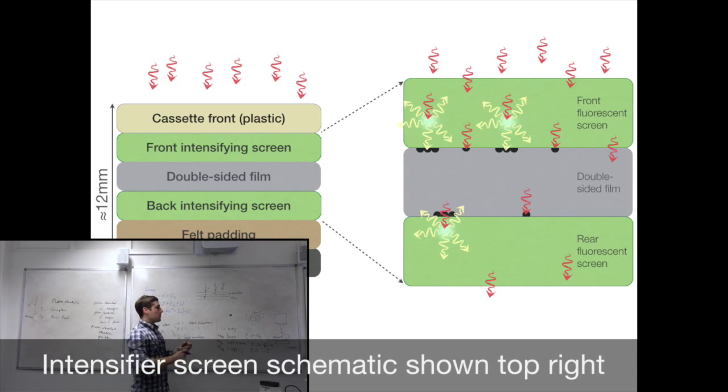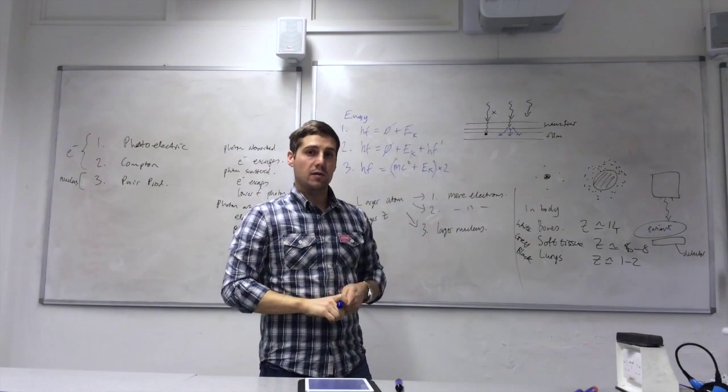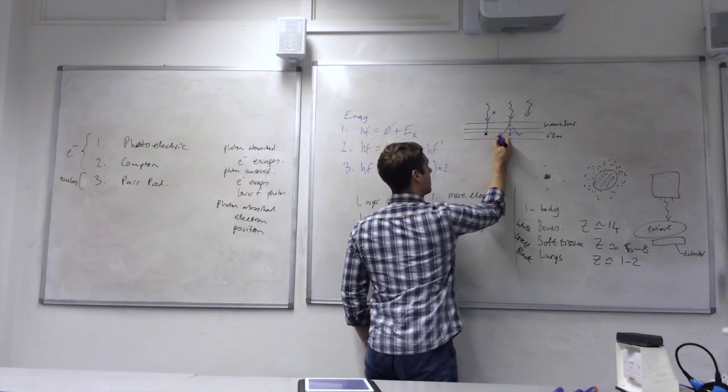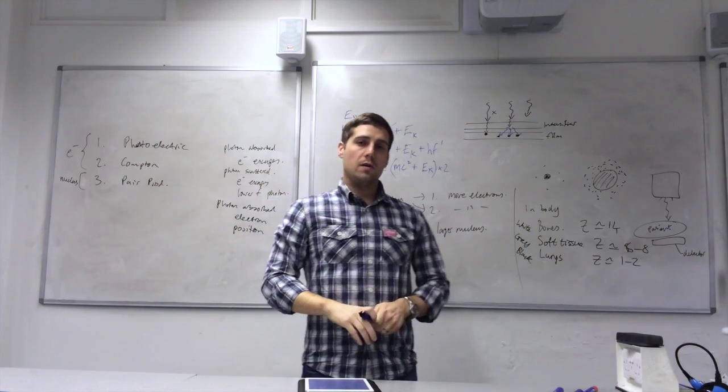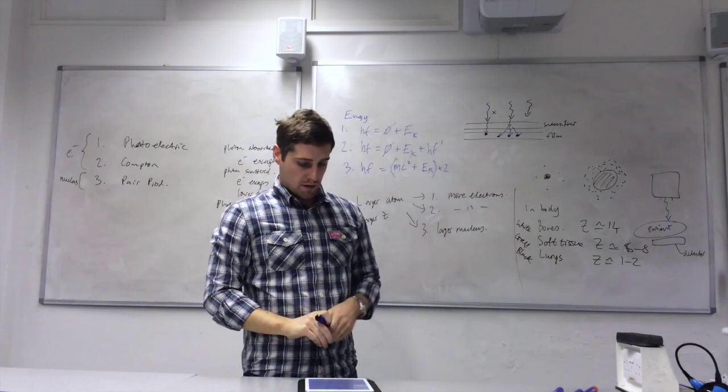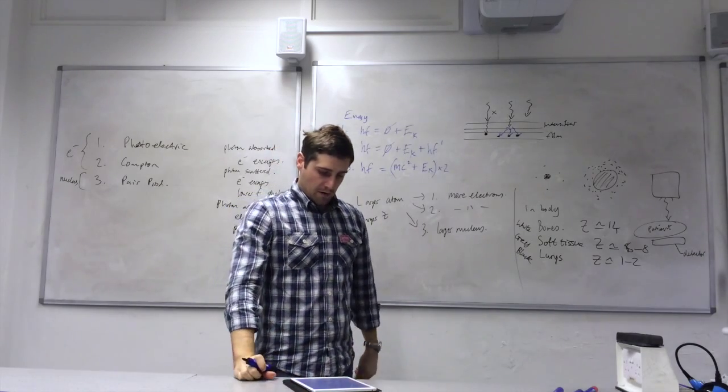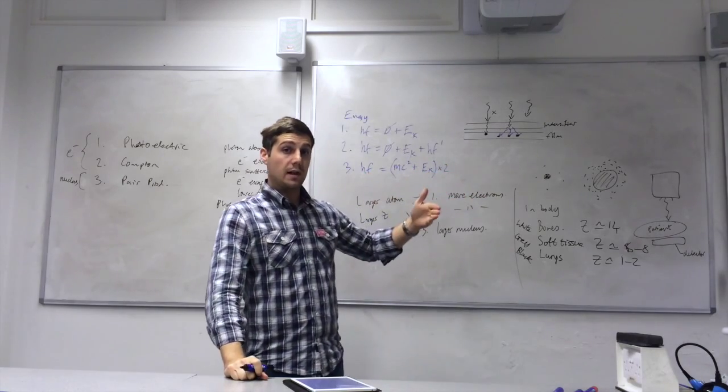And they emit, for every one X-ray photon, they emit many visible light photons. And visible light photons are better at turning photographic film dark, so we'll have more cases of the film going dark. So it turns the film darker at a faster rate.